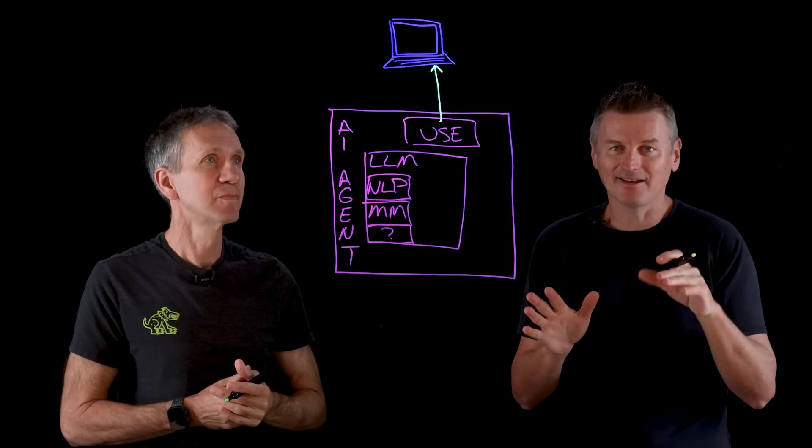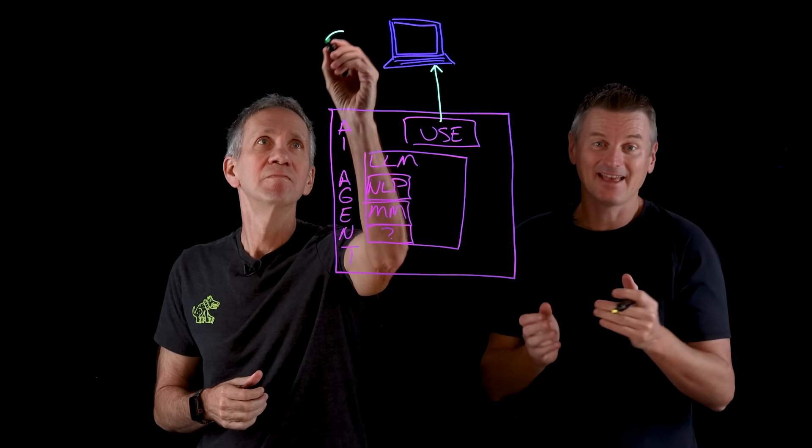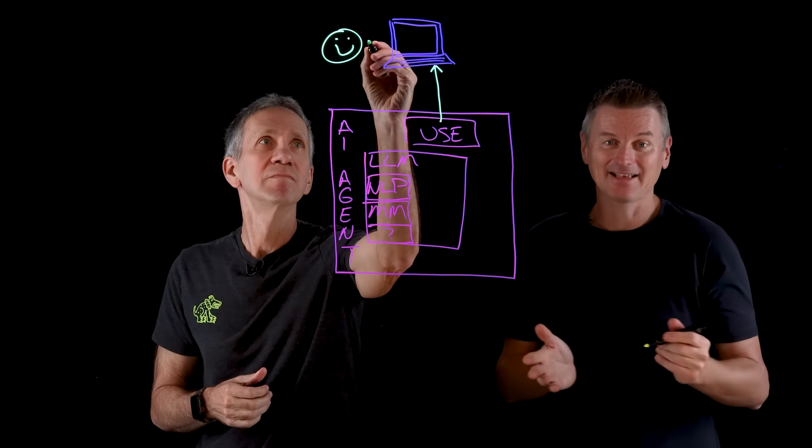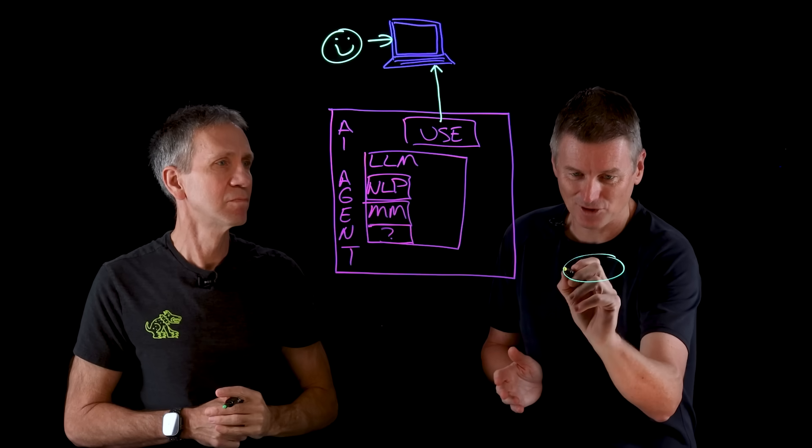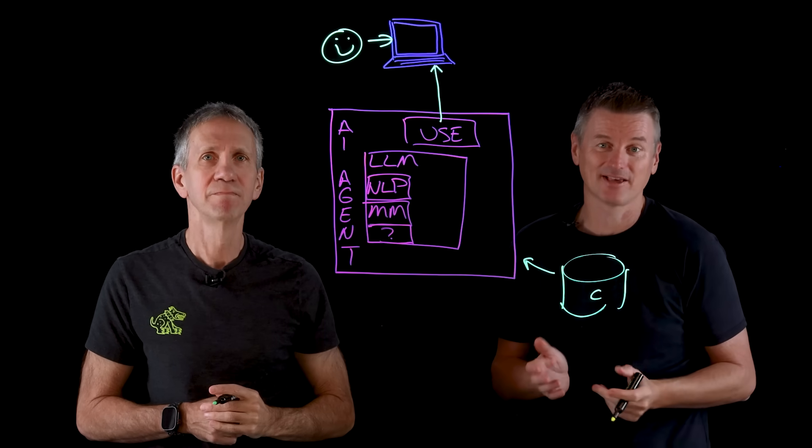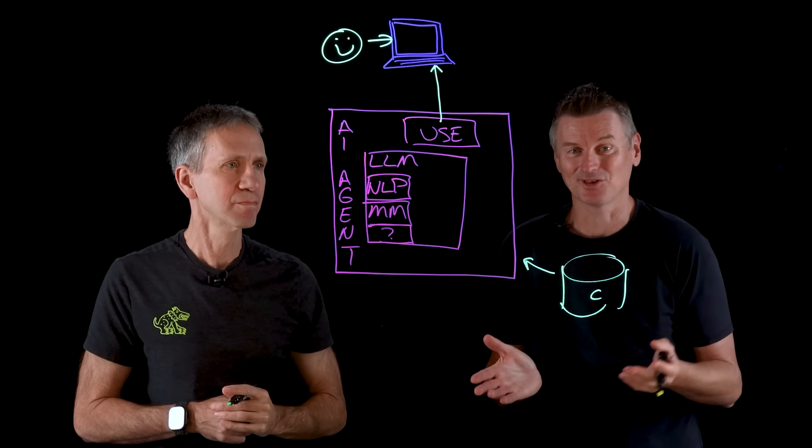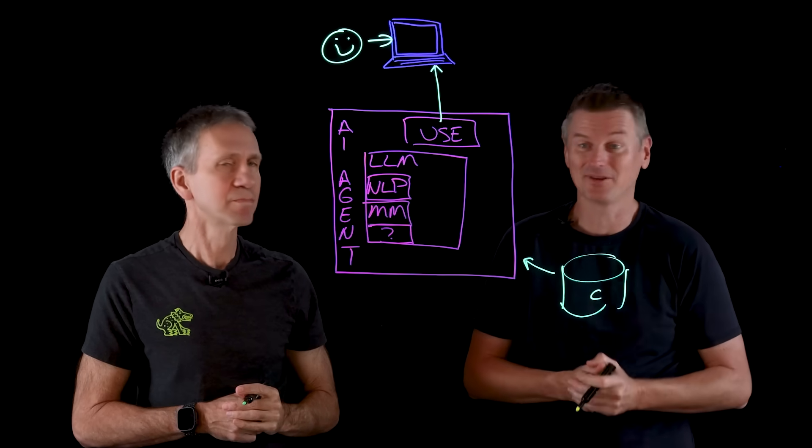Yeah, right. So I enter my shopping prompt at the web browser. And then the agent itself has access to a bunch of contextual information that I have provided. So things like my preferences, my shipping address, my payment information. And then it searches the web for the best deal.